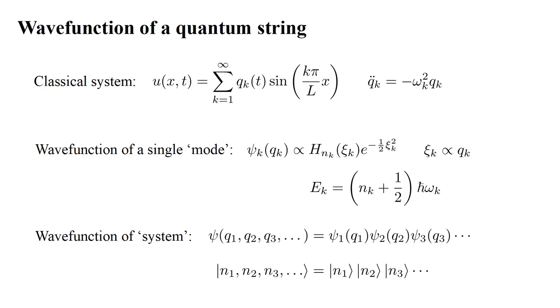The modes oscillate independently, so the quantum state of the entire system is the product of the quantum states of the individual modes. In applications, this turns out to be the more useful representation.